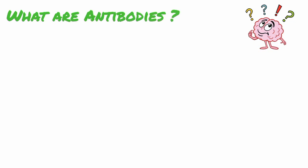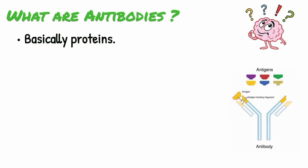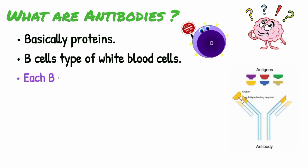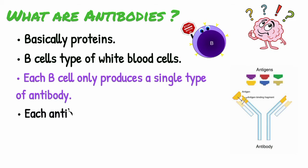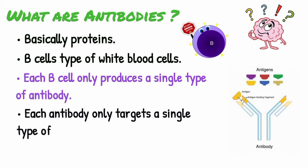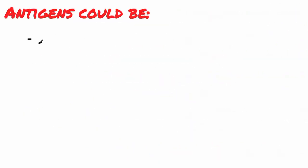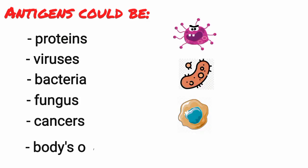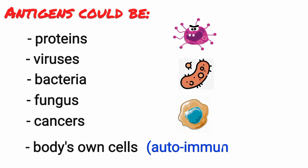Firstly, it is essential to have a basic understanding about antibodies, otherwise you will find it extremely tough to understand hepatitis B serology. Antibodies are basically proteins produced by B cells, and there are millions of types of antibodies. Each B cell only produces a single type of antibody, and this single type of antibody only targets a single type of protein, known as an antigen. Antigens could be proteins that are part of viruses, bacteria, fungus, or cancers, or even the body's own cells in the case of autoimmune disease.